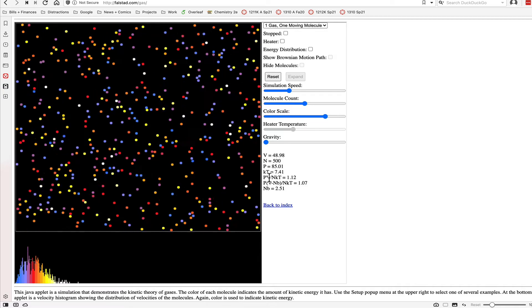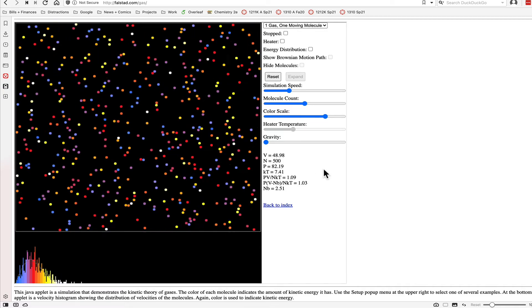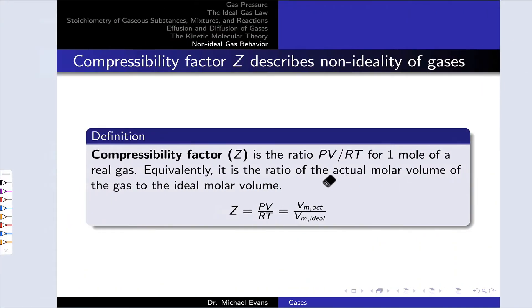PV divided by NKT for this submicroscopic sample, or PV divided by NRT for a macroscopic sample, should be equal to 1 for a single mole of gas. For an ideal gas, this value is equal to 1. It's given the letter Z.